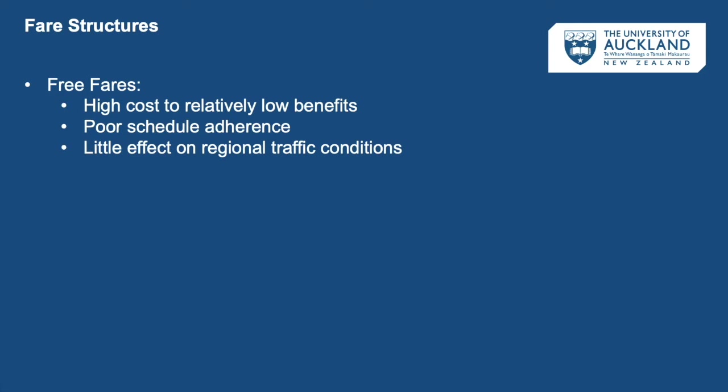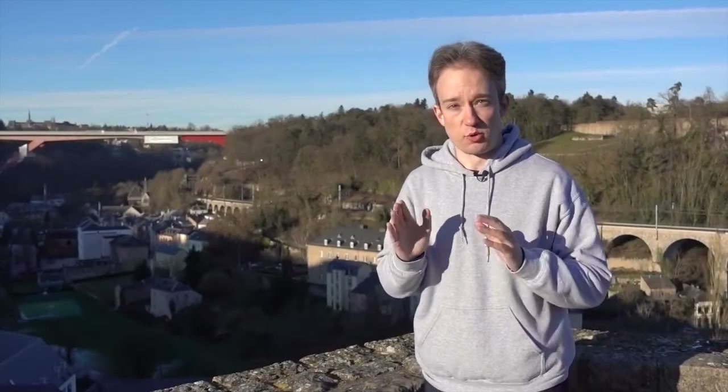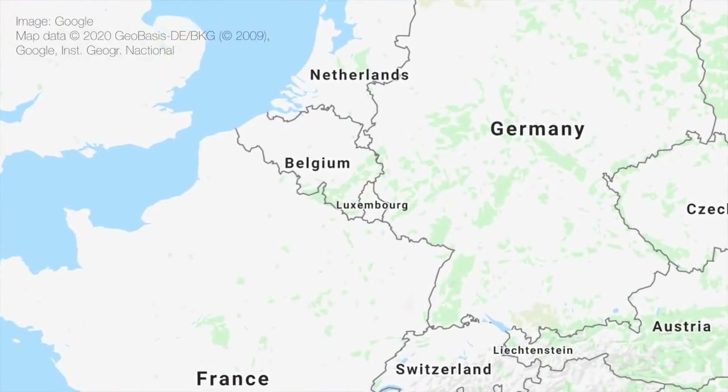Some transit agencies offer free fares for downtown trips, and that tends to produce better results — cities have seen significant ridership increases in downtown areas from free fares. This typically attracts tourists and others who don't want to invest in a transit card but are happy to hop on and off at no cost. Luxembourg is a small country — about 50 miles by 35 miles with just over 600,000 people — where around 200,000 people commute into the capital city daily, half from outside the country, but less than 20% travel by public transit.